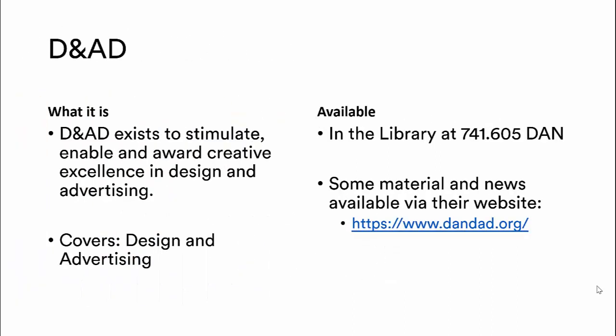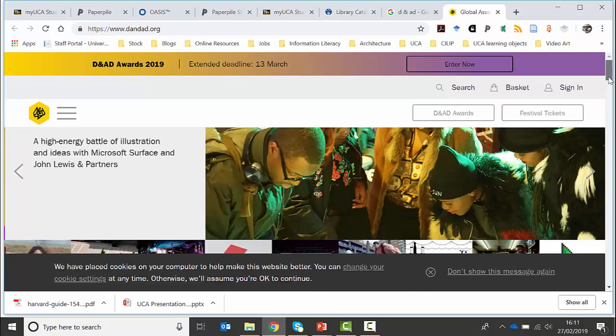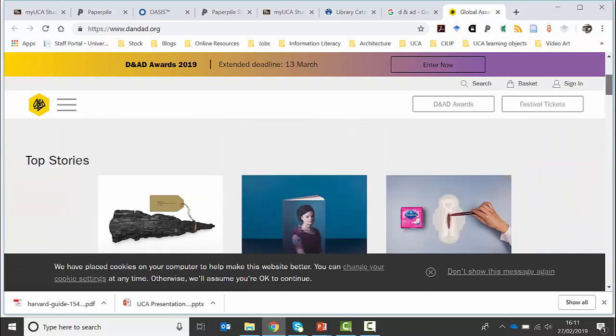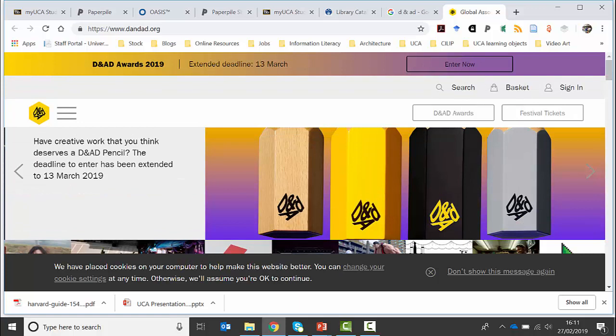D&AD stands for Design and Art Direction and their aim is to stimulate, enable and award creative excellence in design and advertising. This annual covers all sorts of design and advertising examples and there's an annual produced every year which you can find in the library — the number is provided. You can also look at their website for lots of information. Some of these organisations provide highlights from their awards but also have news and example material on their websites, including tips and tricks, articles and news. So there's quite a lot of information you can get via their website, not just in the annual.